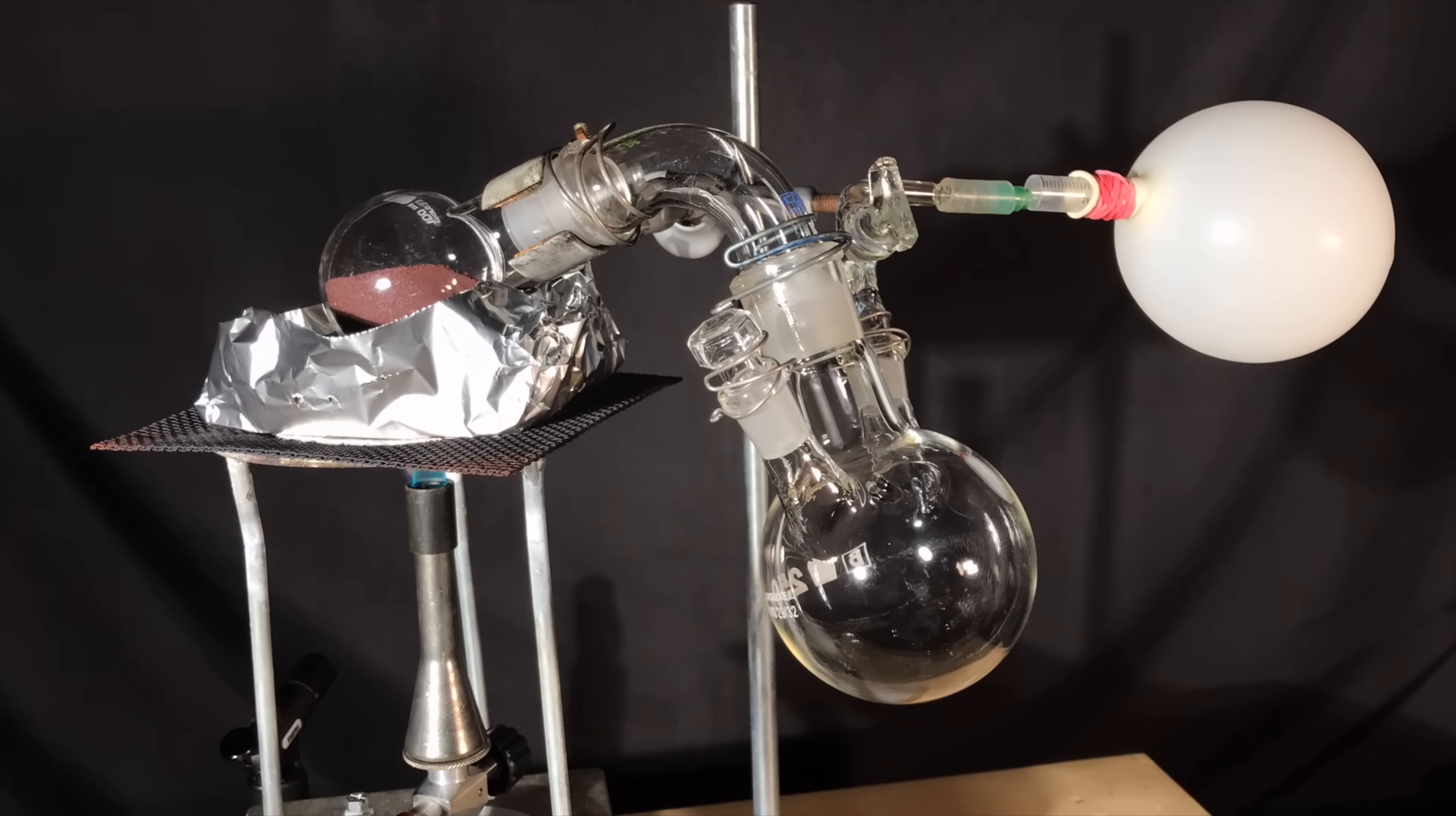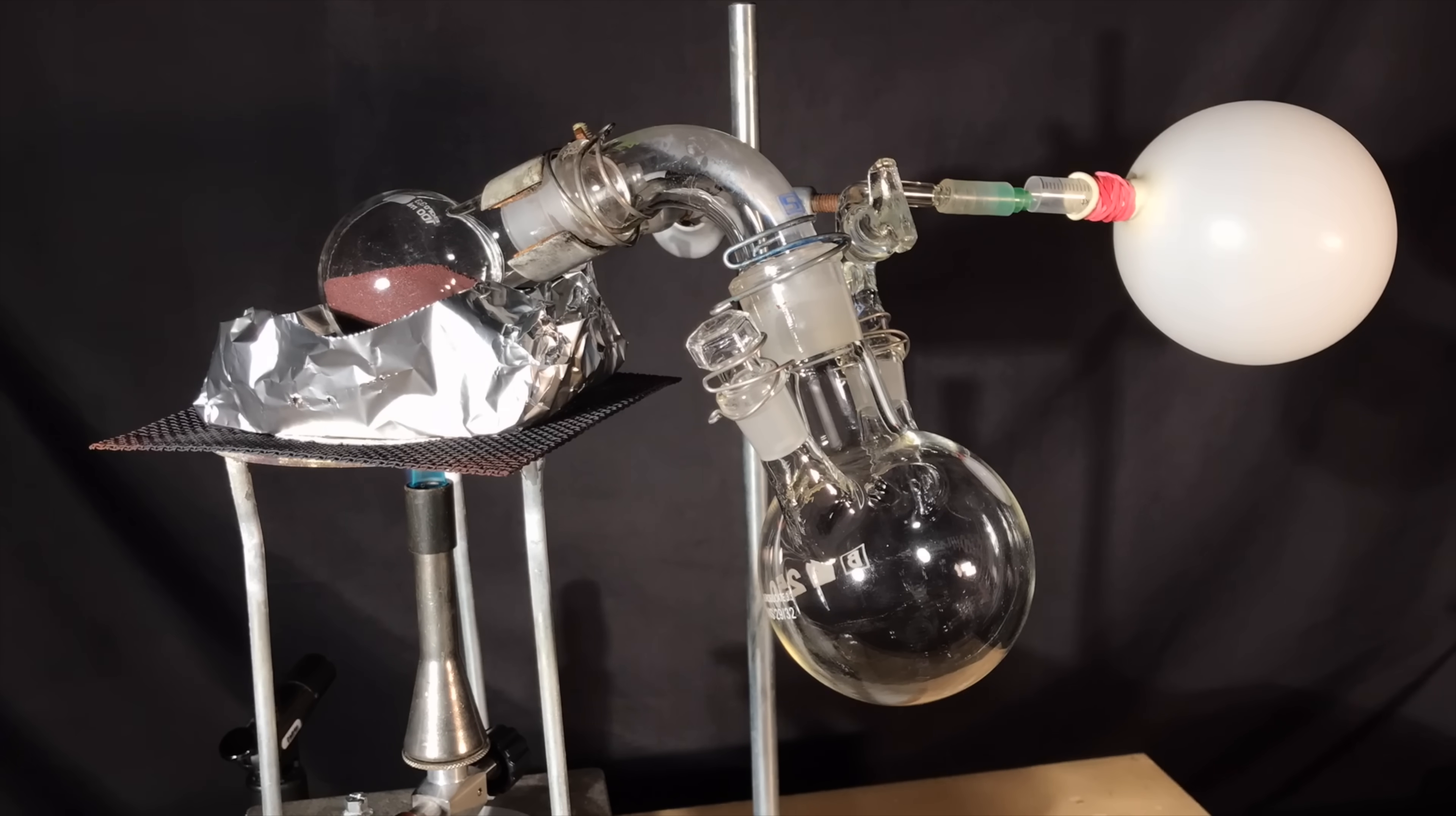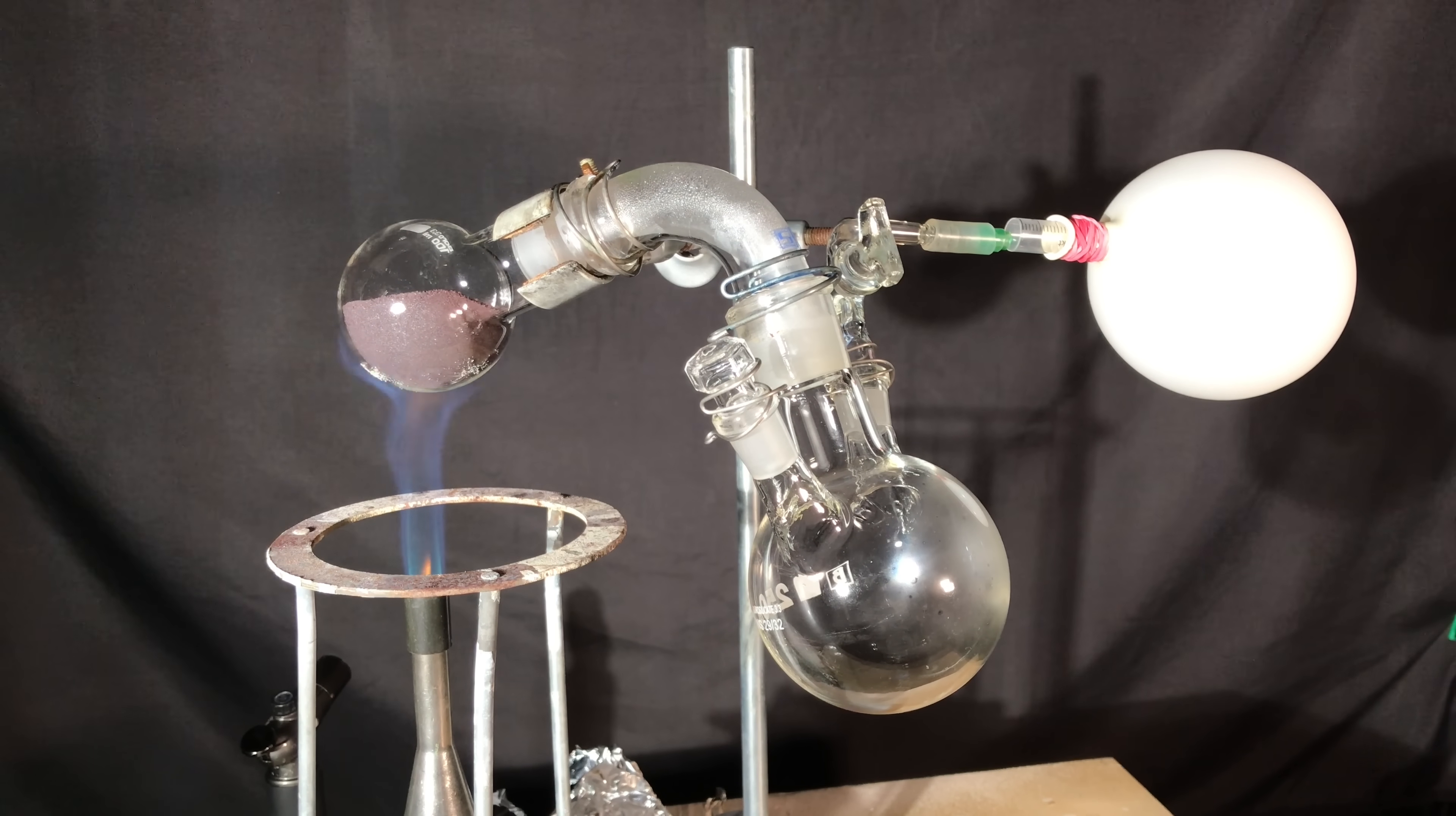To ensure pressure equalization without air entering the apparatus, the stop valve connected to the argon balloon must be opened before starting the heating process. It would be possible not to flush with argon beforehand, but phosphorus will react with air and it might become dangerous. It would also lower the yield, so we decided to use argon instead.